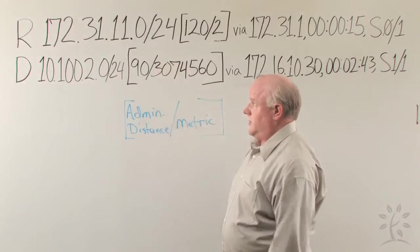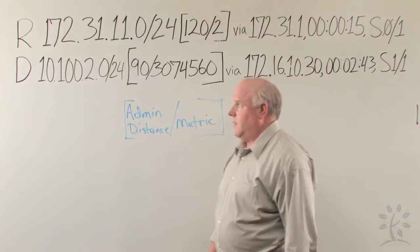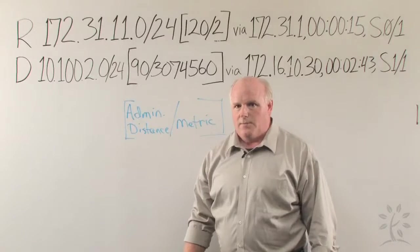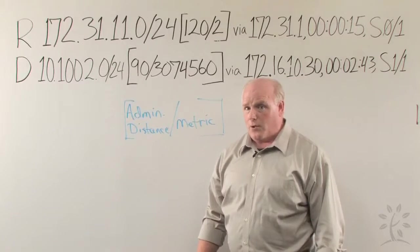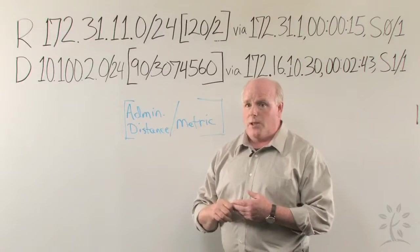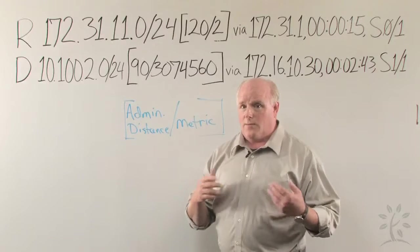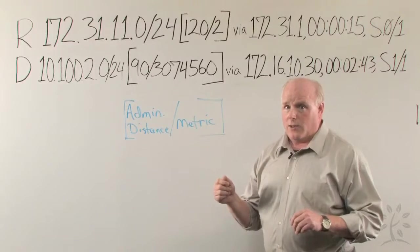Let's take a look at the second line now for another example of how these can be read. The D indicates that this route comes from EIGRP. EIGRP is an updated and much more sophisticated protocol than RIP, and instead of just counting hops, EIGRP can count bandwidth, wire speed, and a few other factors to come up with a much more realistic map of how the network is performing.